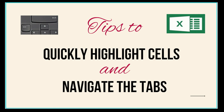Highlighting cells in Excel can be much faster using some simple shortcut keys. You can quickly select and highlight multiple cells in a contiguous range with the use of three shortcut keys: Control, Shift, and Arrow. Watch this video to know how. Plus, you will also learn how to swiftly navigate the tabs without using a mouse.